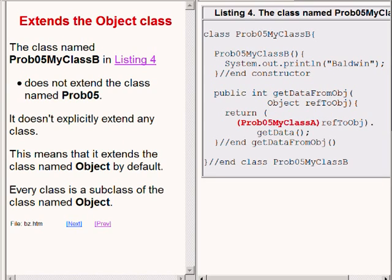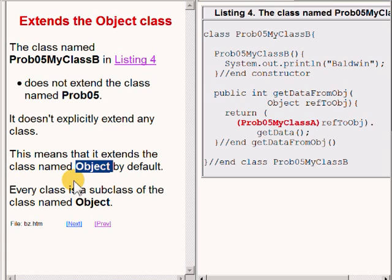The class shown on the right of your screen does not extend the class named Prob05. In fact, it doesn't explicitly extend any other class. This means that it extends the class named Object by default. Every class is a subclass of the class named Object, and if it doesn't explicitly extend some other class, it will extend the class named Object by default.